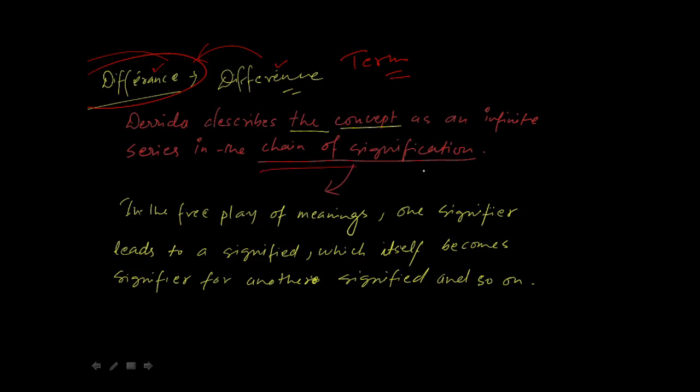If you understand structuralism—I've already made a video on structuralism—but in short, let me tell you what is the chain of signification. In the free play of meanings, one signifier leads to a signified. Let me draw an example here. If I write 'cat,' it is the signifier.